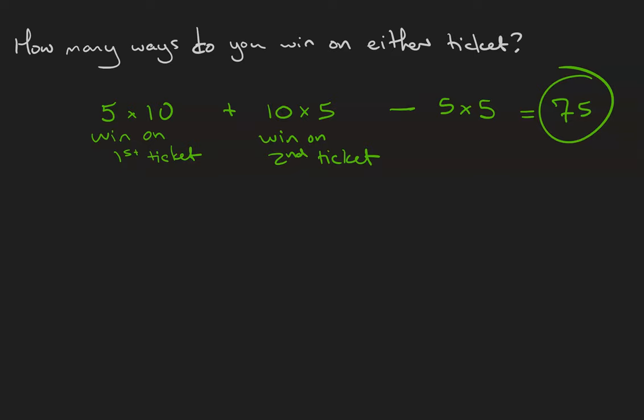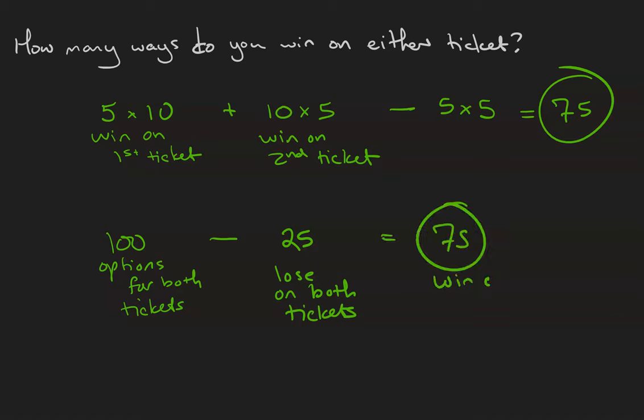There is another way to handle this problem. We know that the sample space of all two ticket configurations is 100. And since there are the same number of ways to lose on both tickets because it's five of one and five of the other as there are to win on both tickets, then that means there are 25 ways to lose on both tickets. Therefore, 100 minus 25 gives you 75 ways to win on a ticket. Sometimes we can count things indirectly by counting the complement.